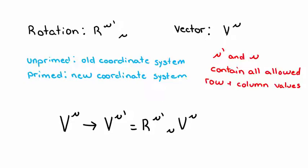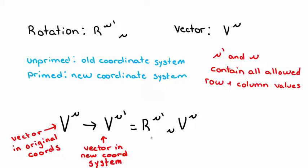By the rule, V mu' equals R mu' mu times V mu. Again, V mu represents the original vector, V mu' represents the vector in the new coordinate system, and R mu' mu represents the transformation operation that gets us from the old coordinate system into the new coordinate system.